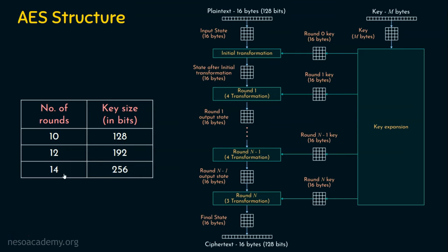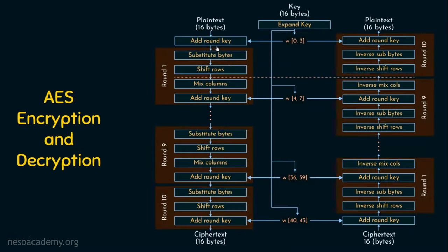A key scheduling algorithm takes the original key provided to the encryption algorithm and expands the keys based on the requirement. This expansion is what we are going to see in today's presentation. For AES-128, the key size is 16 bytes or 128 bits, giving us 10 rounds and requiring 11 round keys.